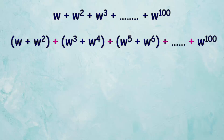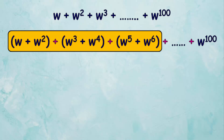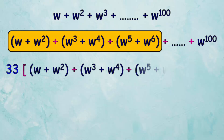You will notice that the first three terms repeat 33 times until you reach omega to the power of 100. So we write the expression as 33 multiplied by the group: omega plus omega squared plus omega cubed plus omega to the 4th plus omega to the 5th plus omega to the 6th, then add omega to the power of 100.